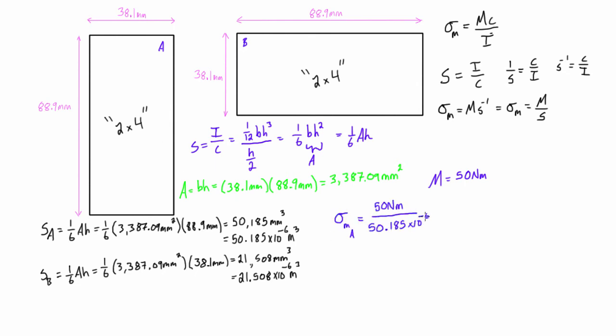then we're just going to get 0.996 megapascals for A and 2.3 megapascals for B. So what this is just saying is that for any given internal moment, that our max stress will be less when the 2x4 is oriented like this in A than when it is oriented like this in B.